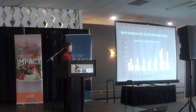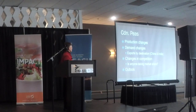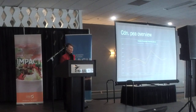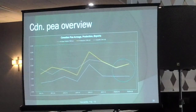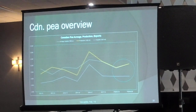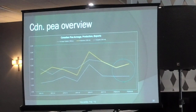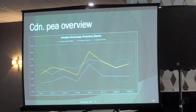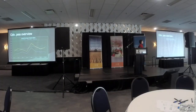Looking at Canadian peas specifically: the graph shows acreage seeded in gray, with production and exports. The peak production was in 2016–17 when we over-produced pulses generally, and we have recovered a lot since then. I think this coming year will go up a little bit from current levels.